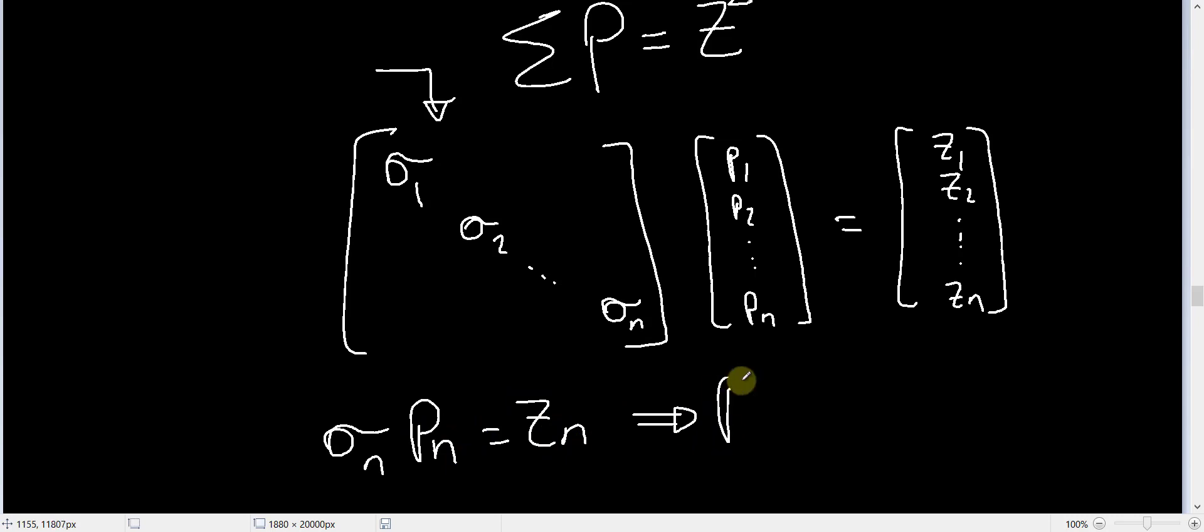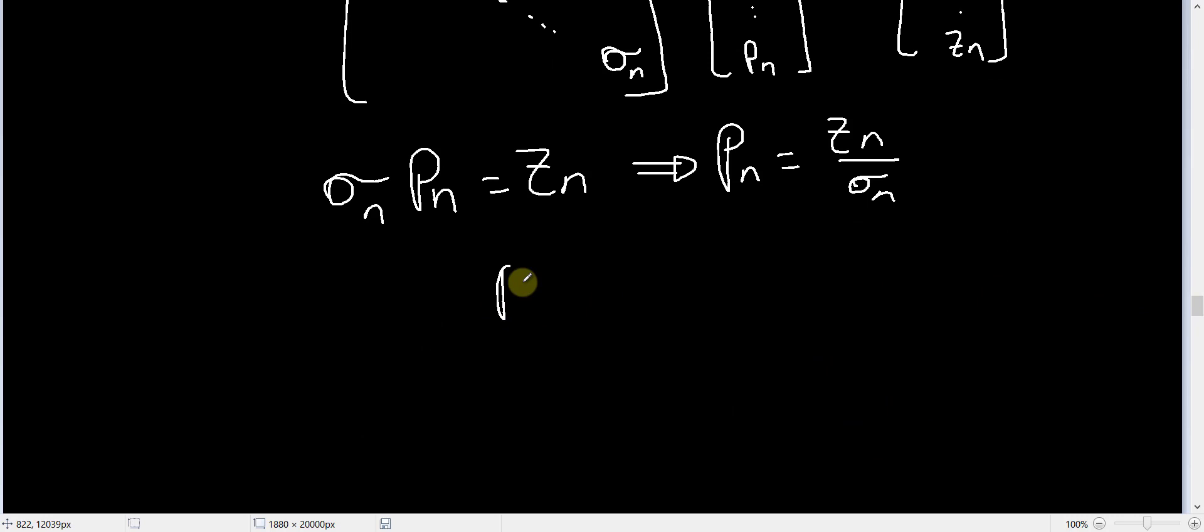So you see that P_N is equal to Z_N over σ_N. And in general, P_i is equal to Z_i over σ_i. So if you transform your system into this diagonal form, the solution becomes very straightforward.